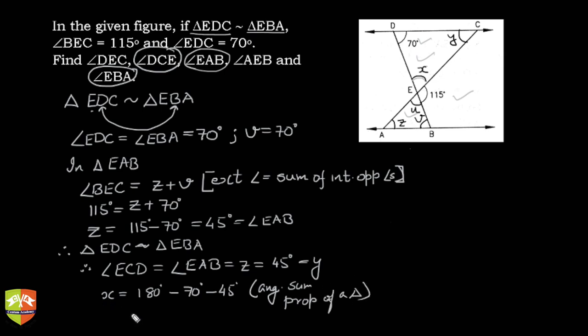So X is clearly 180 minus 70 is 110, and 110 minus 45 is 65 degrees. So we get X as 65 degrees, and this will be equal to U as well because of vertically opposite angles.